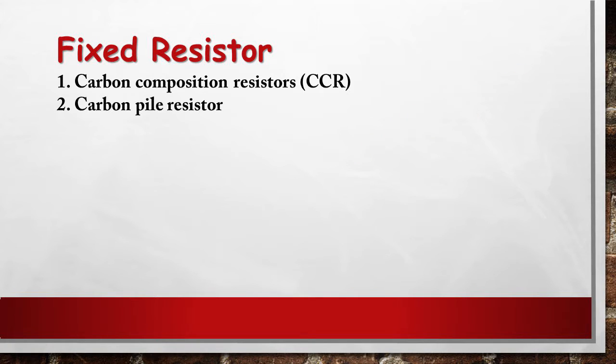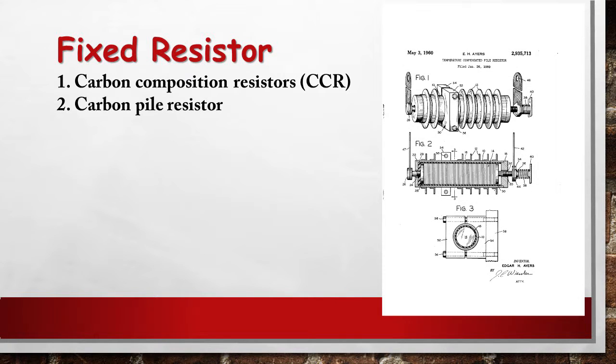A carbon pile resistor is made of a stack of carbon discs compressed between two metal contact plates. Adjusting the clamping pressure changes the resistance between the plates. These resistors are used when an adjustable load is required, for example in testing automotive batteries or radio transmitters. A carbon pile resistor can also be used as a speed control for small motors in household appliances.